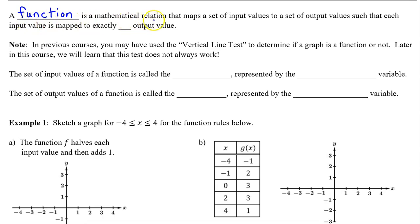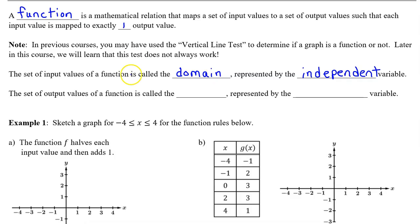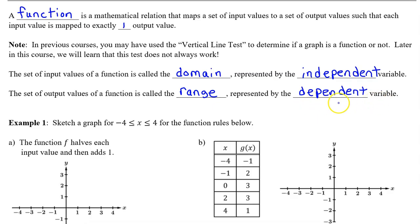A function is a mathematical relation that maps a set of input values to a set of output values such that each input value is mapped to exactly one output value. Note that in previous courses you may have used the vertical line test, but later in this course we will learn that this test does not always work. The set of input values is called the domain, represented by the independent variable, usually x or t. The set of output values is called the range, represented by the dependent variable, usually y.